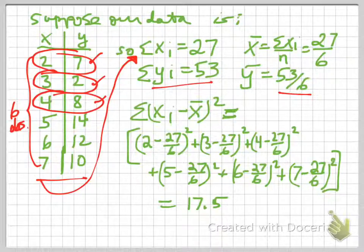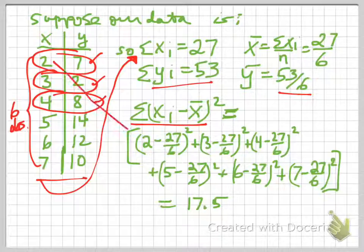We add up the xi minus the mean of x, and take the square of that. So what does that look like? Well, the first observation of x is 2. So 2 minus the mean of x, which is 27 over 6, squared.